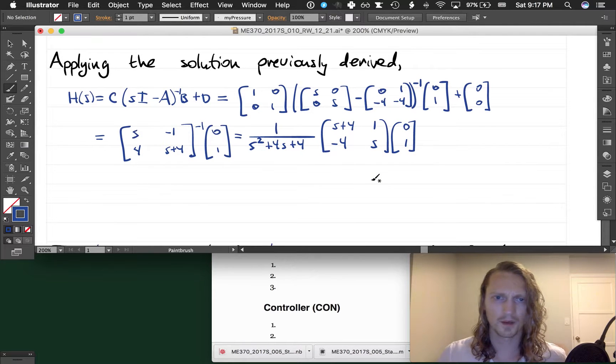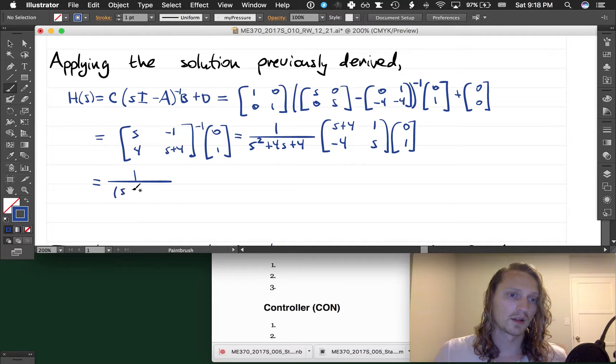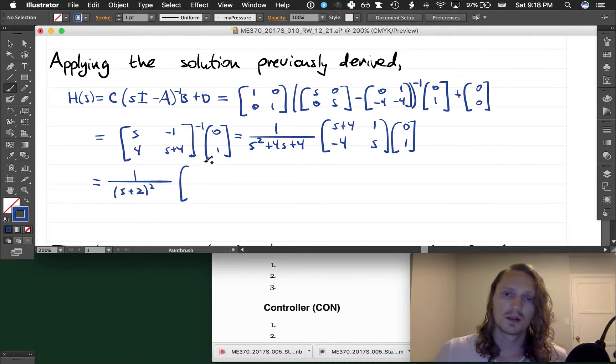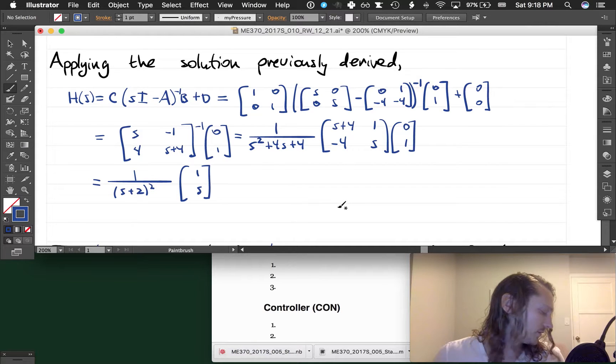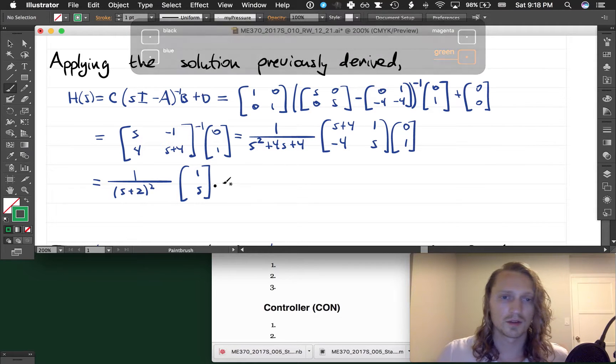Okay, and let's write that on the next line. One over—you may have noticed that we could factor this expression in the denominator. This is just (s + 2) squared, and that is multiplying the matrix. Matrix multiplication gives us [1; s]. This is our answer. It's pretty simplified at this point, so I will go ahead and say this is our H(s).